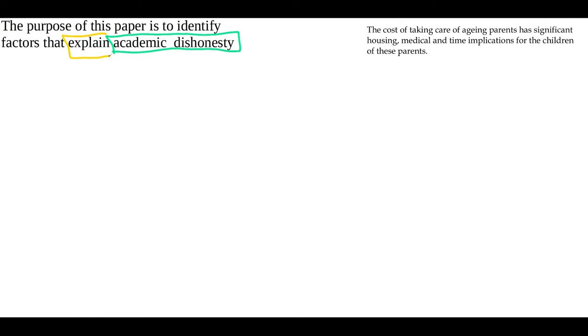One thing you want to keep in mind — and I'm talking from a quantitative perspective — is that you almost always want to include your dependent variable or your main variable in your purpose statement. So academic dishonesty is the star of this paper; I am going to try to explain it. One thing that I do — and I'm not saying everybody should do this — is that I don't talk about the independent variables too much in the study.